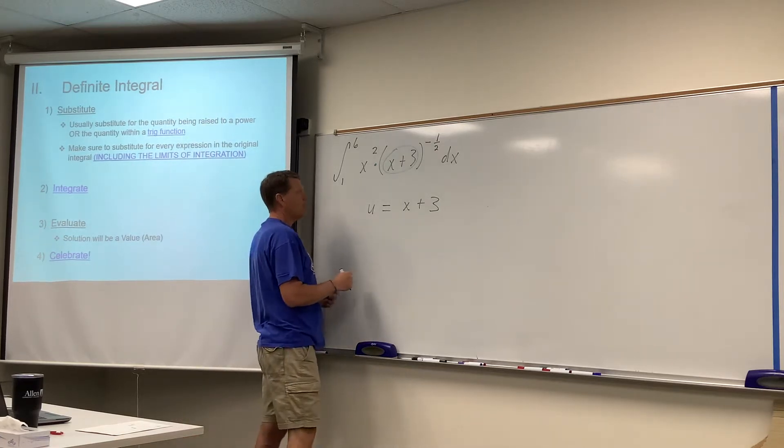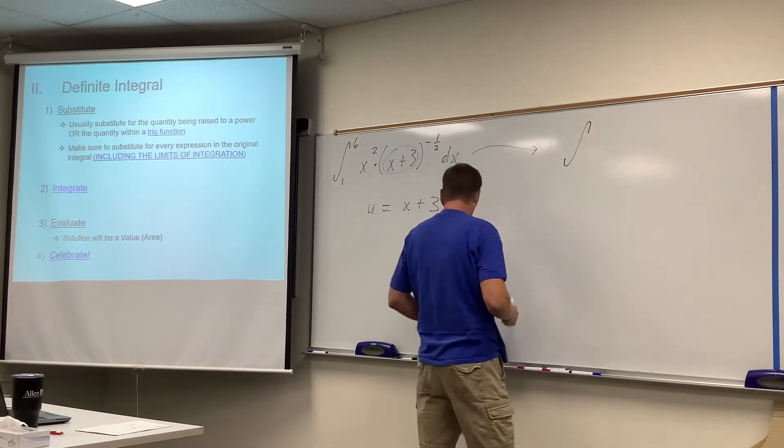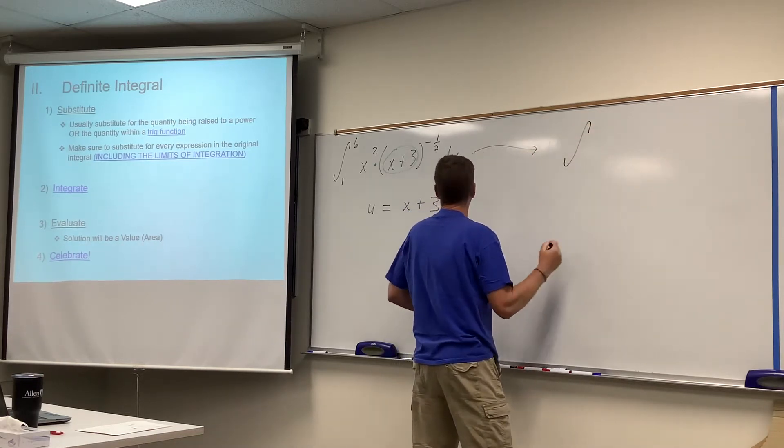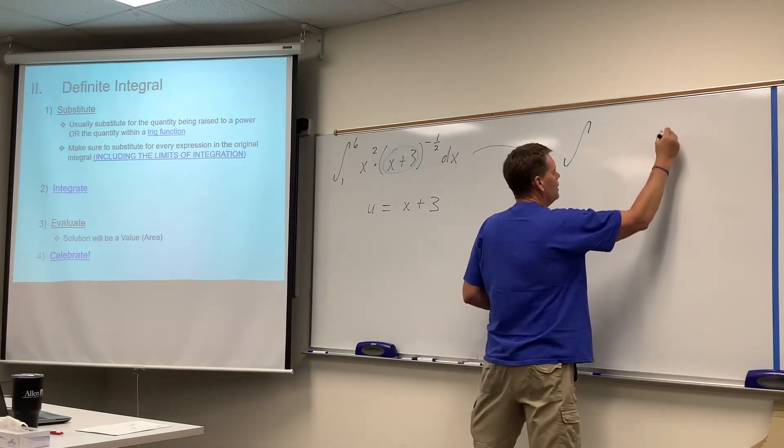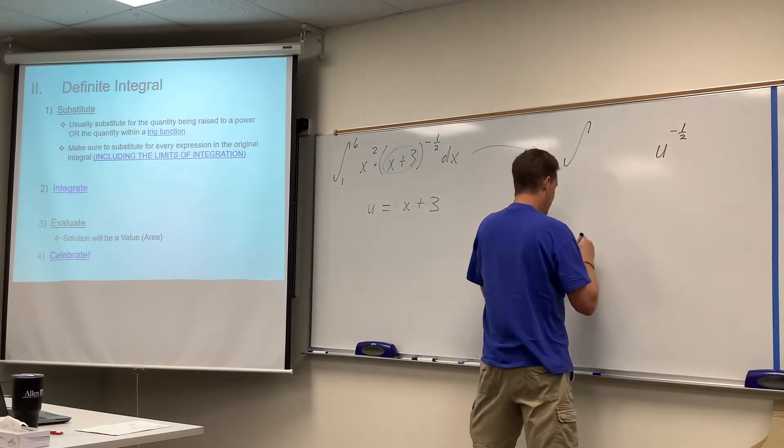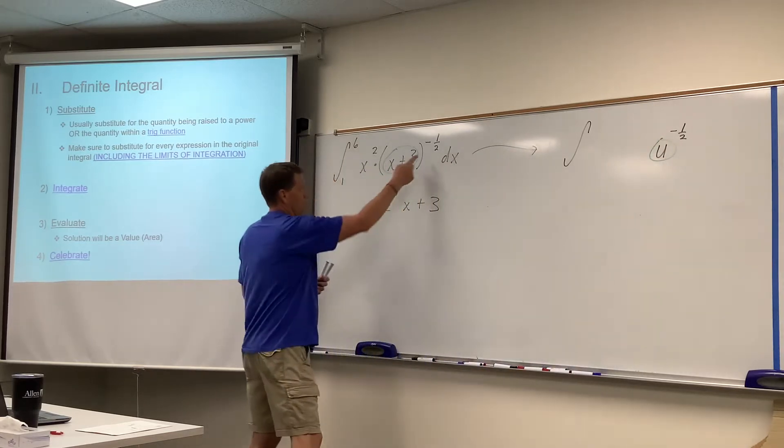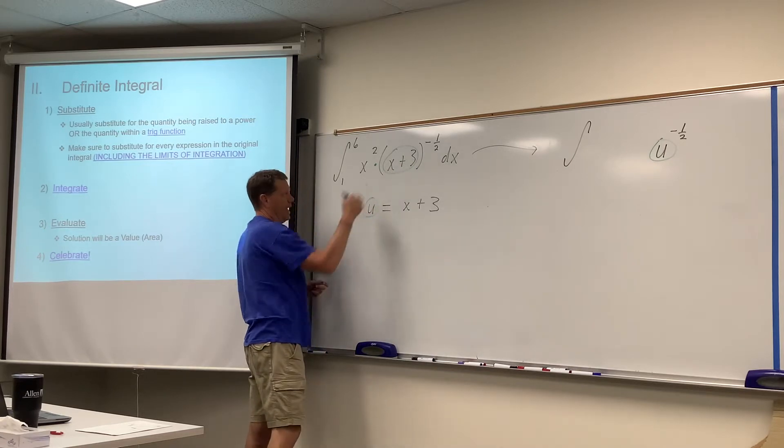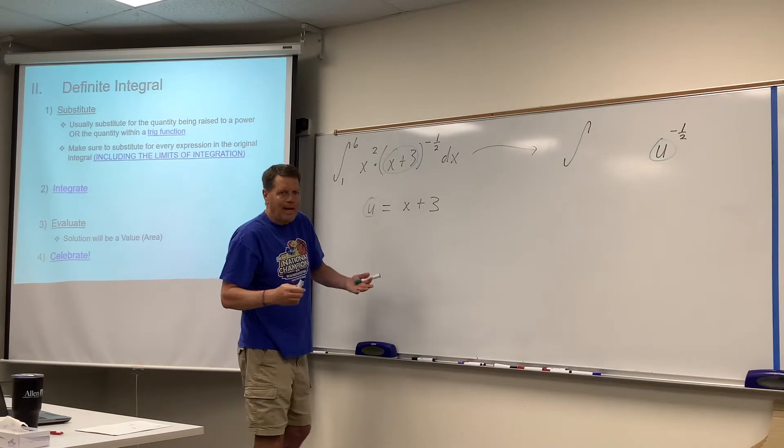So in our new integral that we're going to evaluate, we would now have u to the negative one-half power. u to the negative one-half power is going to take the place of that quantity to the negative half power. So u takes the place of that. Always, always build a dx and see what happens.